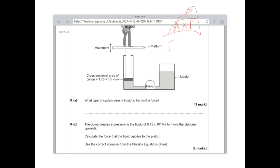So, we've been asked to find the force. So, force is area times pressure. The area in the question is 1.76 times 10 to the minus 2. And we're going to multiply by the pressure, which is 8.75 times 10 to the 4 given in the question. And then when you type all those numbers in, you'll get an answer, which is 1,540. And the units there, obviously, are Newtons.